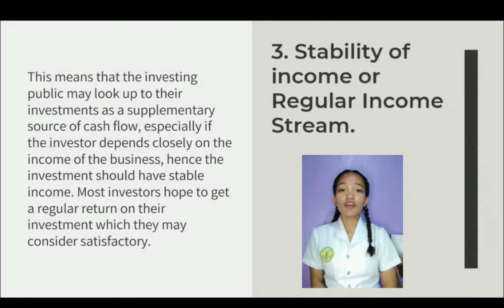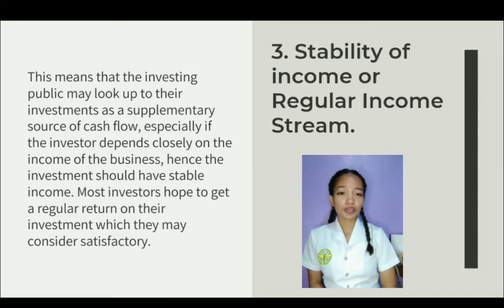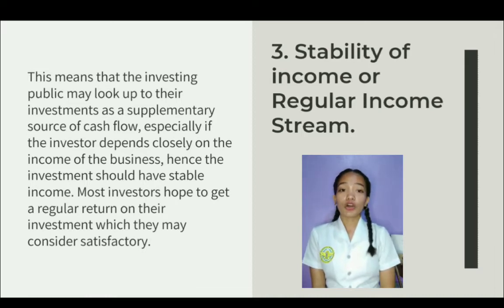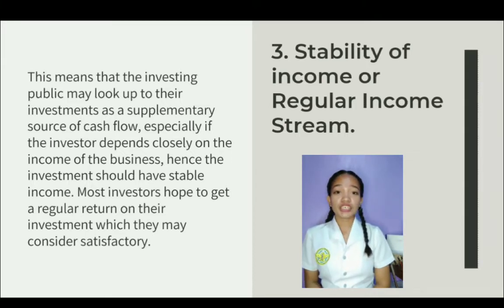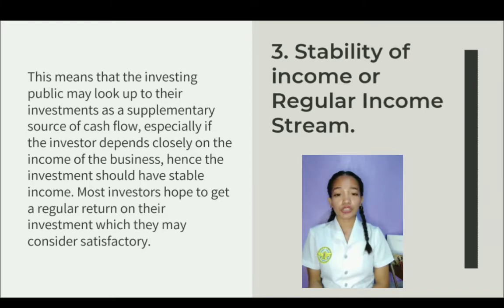Third is the stability of income or regular income stream. This means that the investing public may look to their investments as a supplementary source of cash flow, especially if the investor depends closely on the income of the business. Hence, the investment should have stable income. Most investors hope to get a regular return on their investment which they may consider satisfactory. Before investing in a certain firm, every investor should review or analyze everything to obtain a consistent return or stability of income.